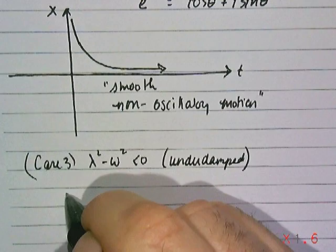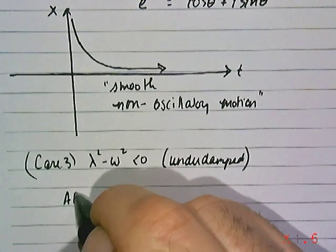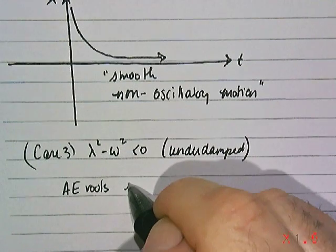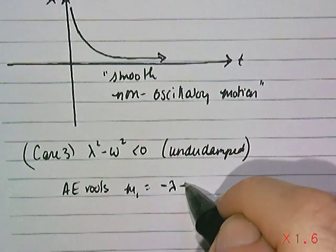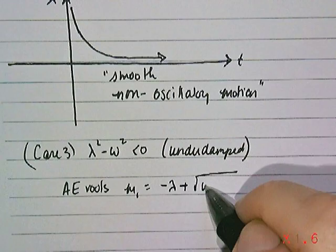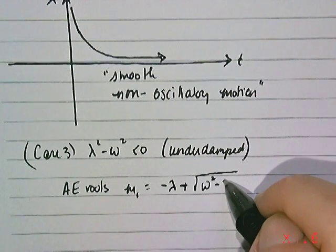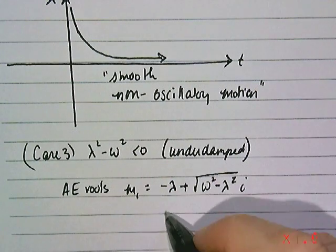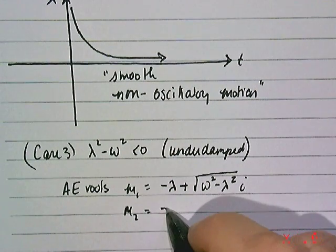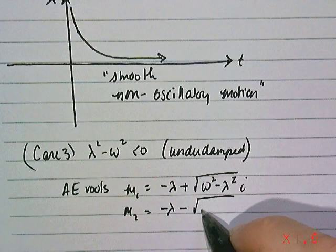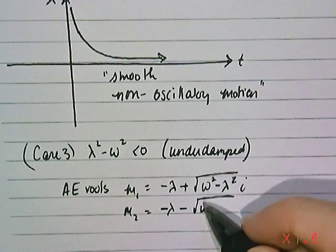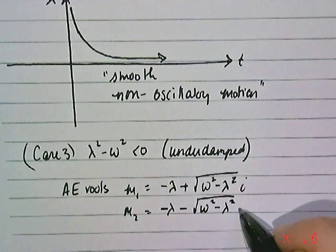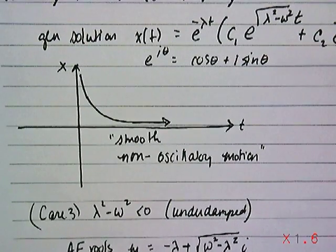The roots for the auxiliary equation in this particular case, because you're going to get complex roots, you're going to have one of them will be -λ + √(ω²-λ²)i. And the second root will be -λ - √(ω²-λ²)i. Because you'll have a negative under the original root, we're going to represent that as a positive value times i.